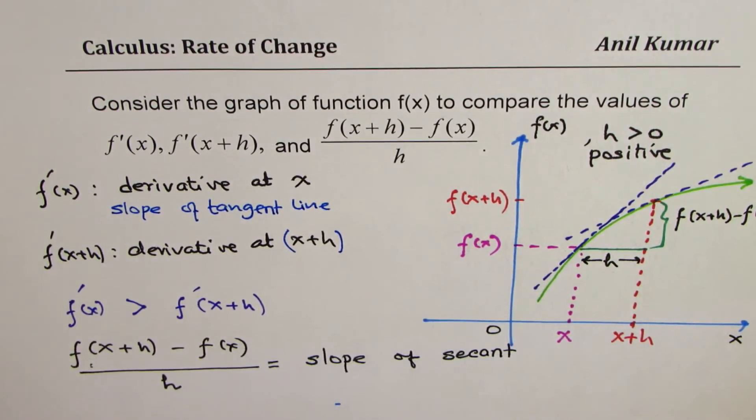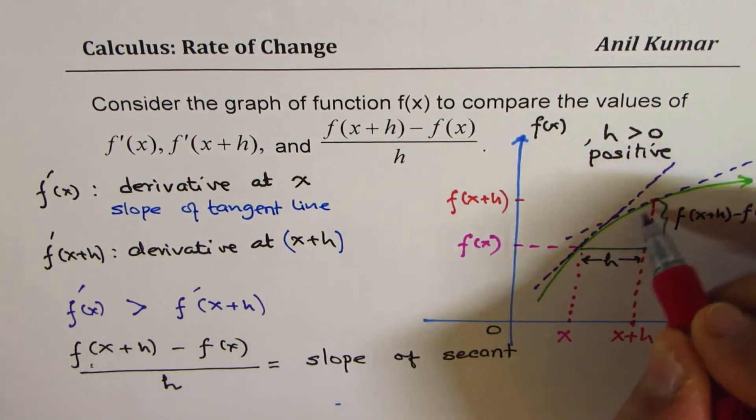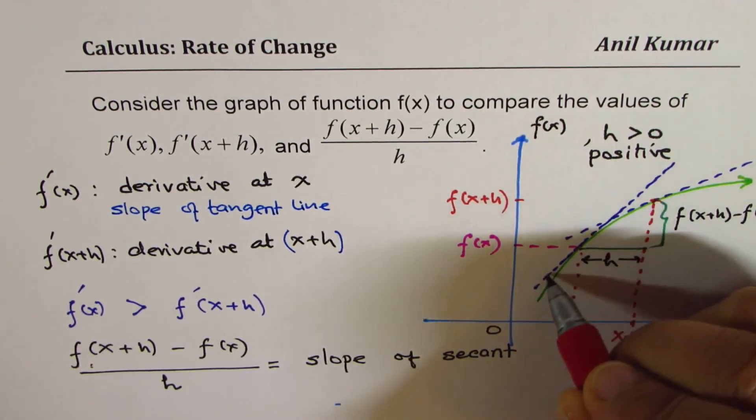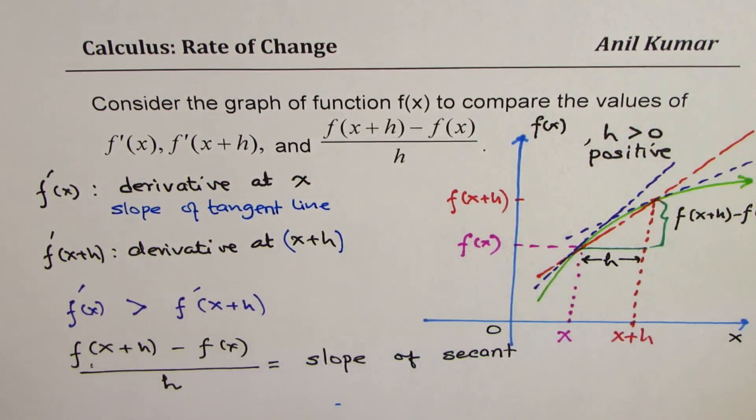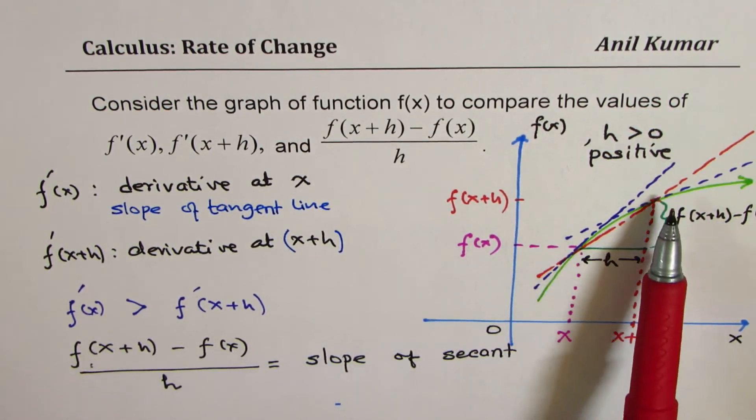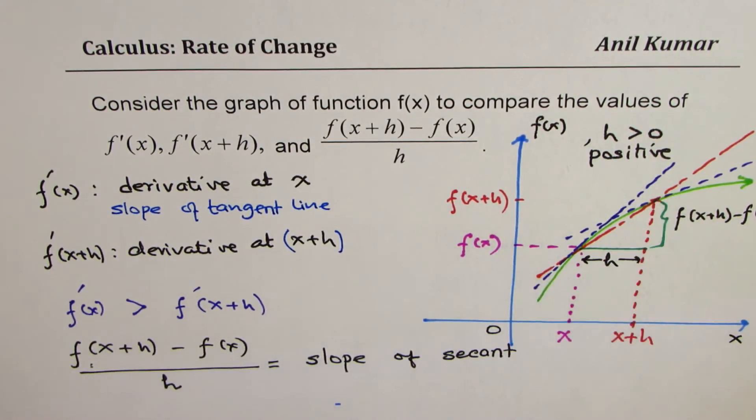Perfect. So let me draw that slope also. So if I join these two points and then connect them, then what do I get? I get this line. Do you see that? So slope of the secant is somewhere in between the two.